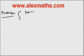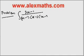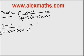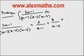Integrate 3x minus 1 whole divided by x minus 1 into x minus 2 into x minus 3. I am taking the expression alone: 3x minus 1 whole divided by x minus 1 into x minus 2 into x minus 3. Using the rules of the partial fraction, I am writing A by x minus 1 plus B by x minus 2 plus C by x minus 3.